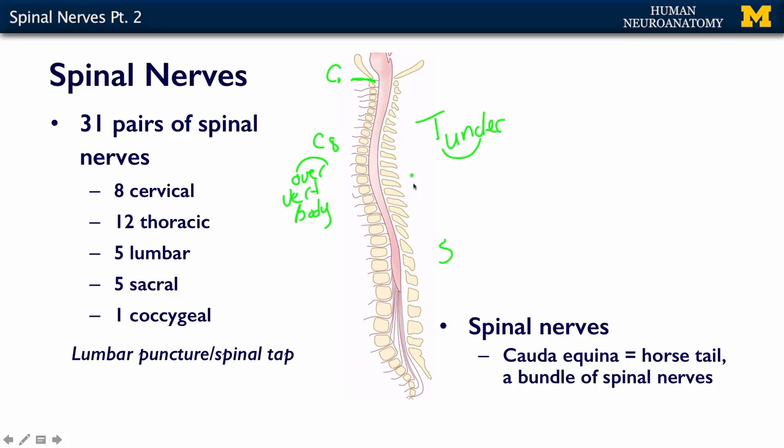T1 all the way down through sacral are going to exit under the vertebral body. So T1 exits below the T1 vertebrae — all the way from C1 over until we get to C8, which exits under C7, and then T1 under T1 all the way down to the sacral.